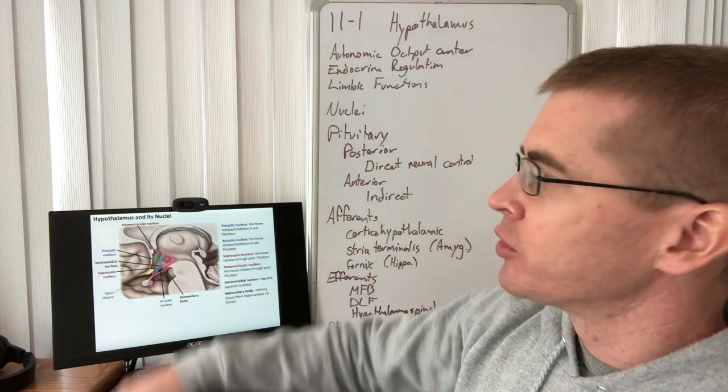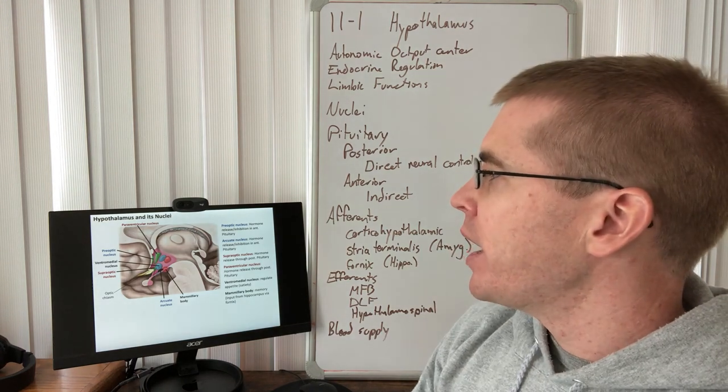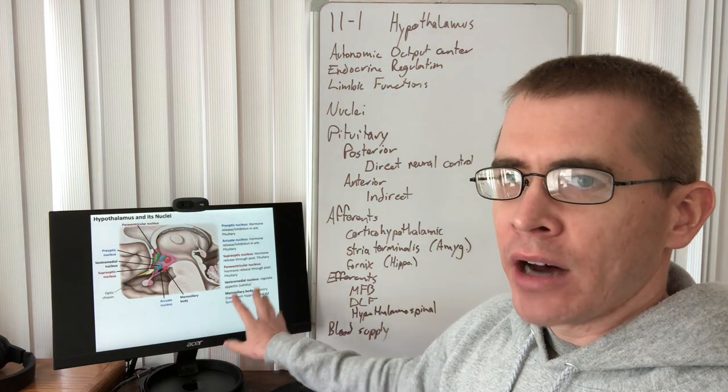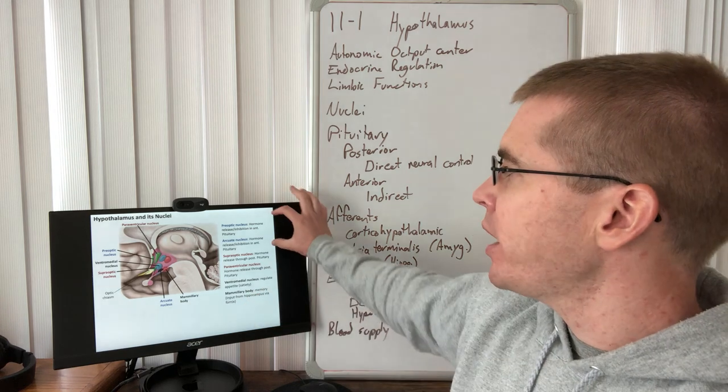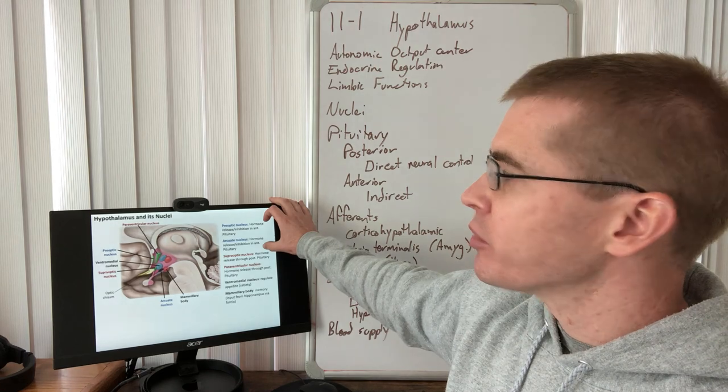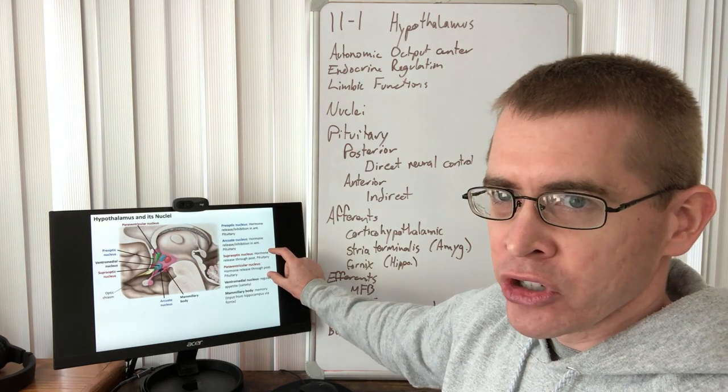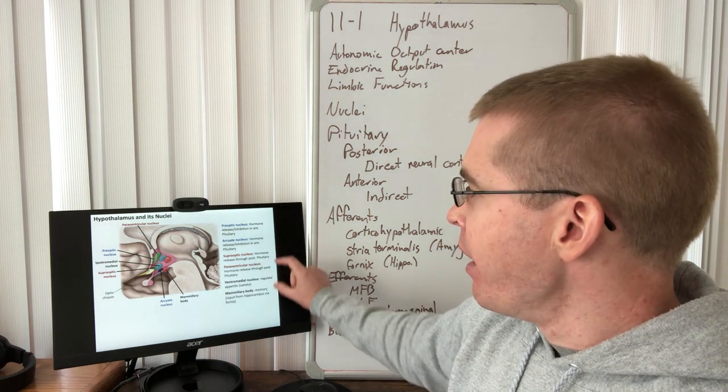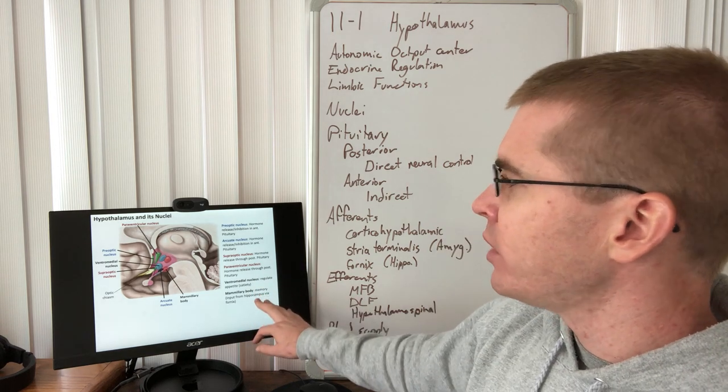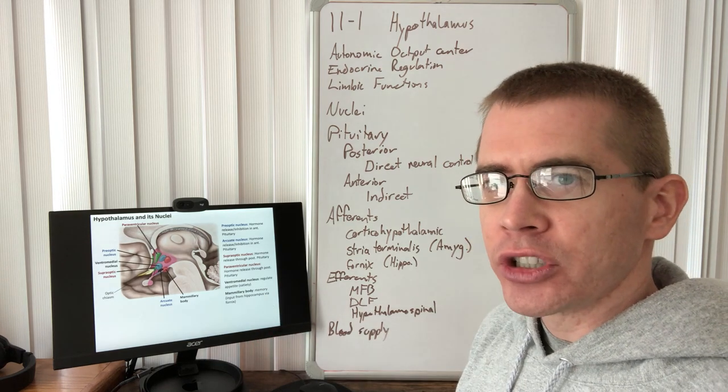There are a number of different hypothalamic nuclei that we're going to be talking about. We'll talk about them here in relation to their outputs to the pituitary. We have the two here in blue that output to the anterior pituitary. So these are the preoptic and arcuate. The superoptic and paraventricular are outputting to the posterior pituitary. And then we have some other functions related to drive and motivation and memory limbic functions, those sorts of things.